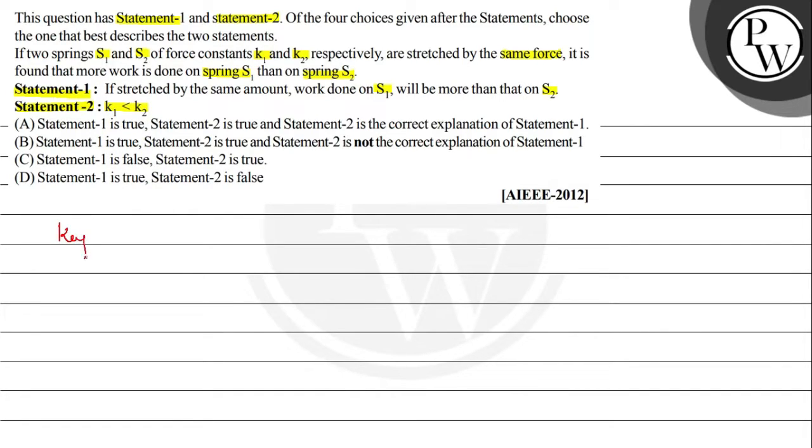Now, let us see the key concept. So we have work done which is equal to half of Kx square, and the force which has been applied onto the spring is given by K into X.